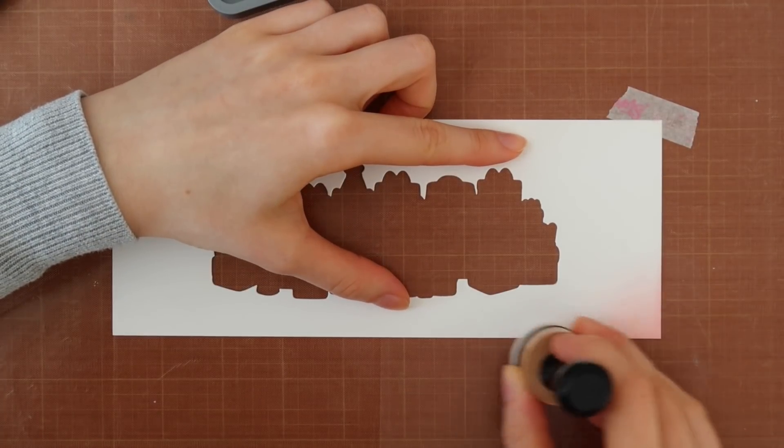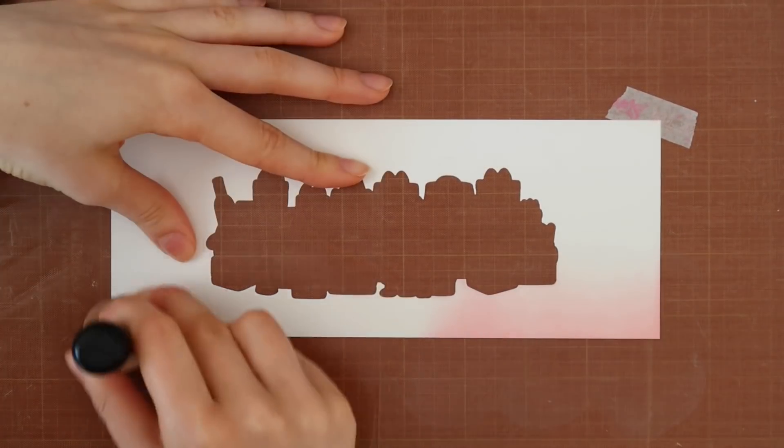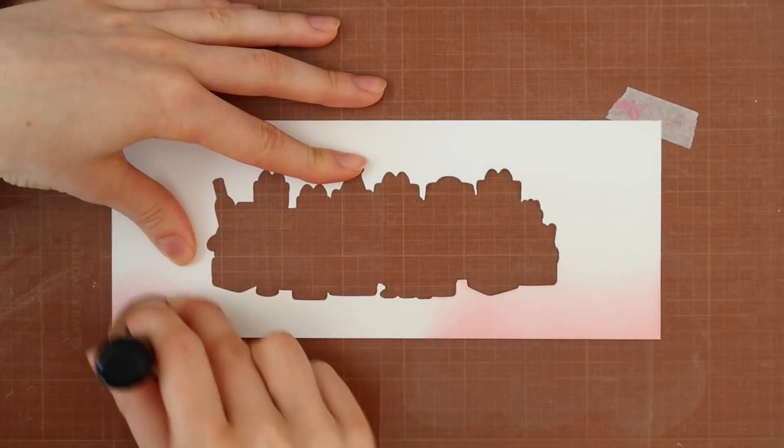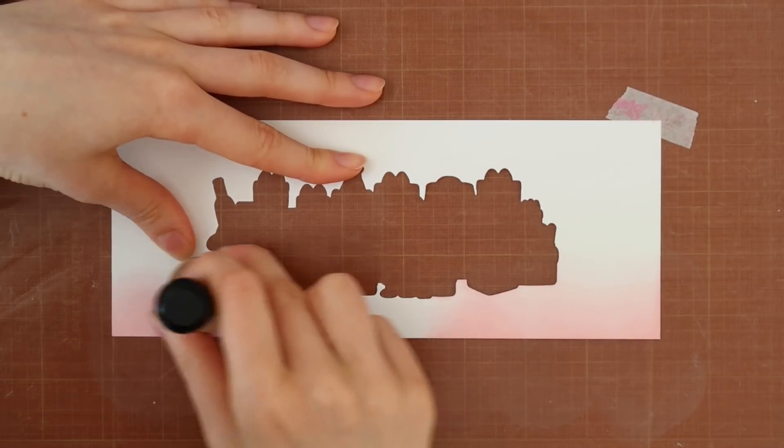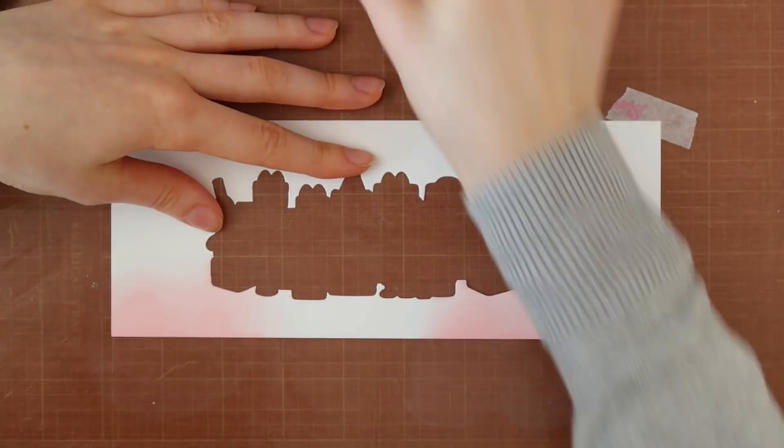I wanted to add some color. So I'm using my Spun Sugar Distress Oxide ink and I am blending that in. So I am applying it heavily on the bottom of the cardstock and then just blending my way up. And I'm kind of letting that fade out to create an airbrushed ombre effect.